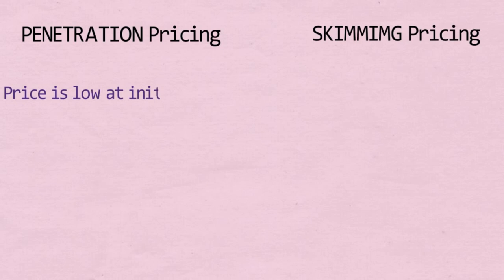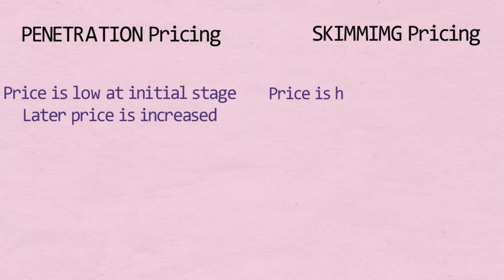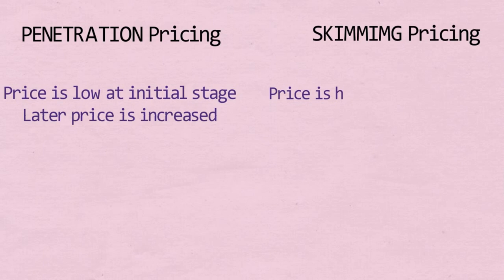To summarize: in penetration pricing, initial prices are low and are set higher in later stages. In skimming pricing, prices are very high in the initial stages and become lower over time.